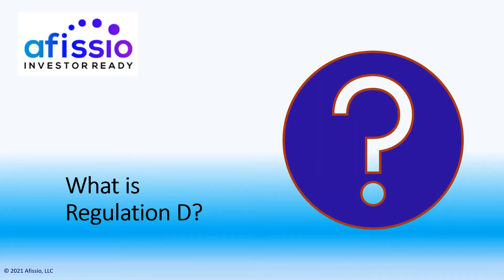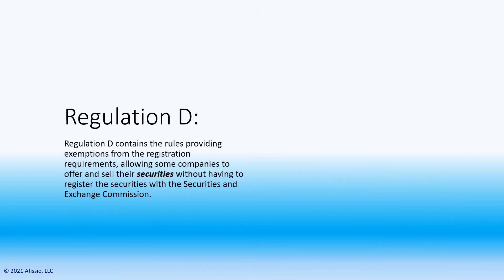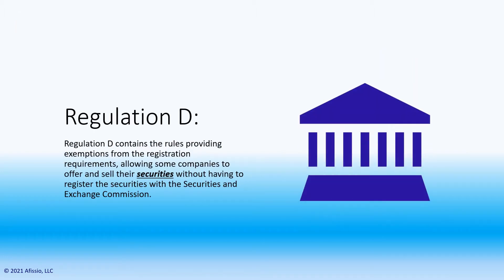As an early stage company, you will most likely be involved in some type of transaction that includes the purchase and sale of securities. That's where Regulation D comes into the picture. Regulation D prescribes the qualifications companies must meet to be exempt from registration of their securities.